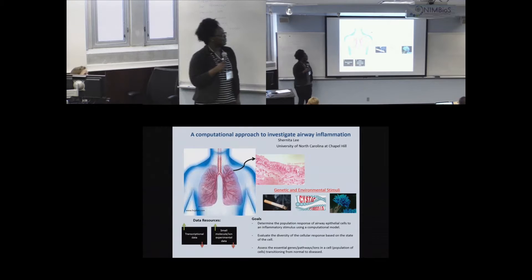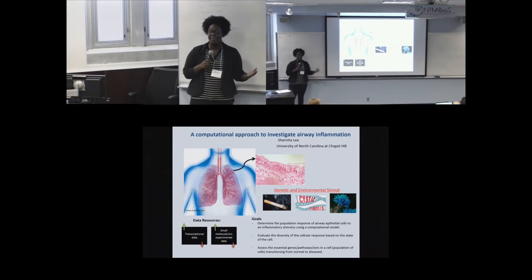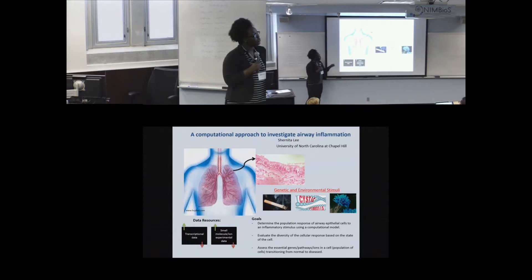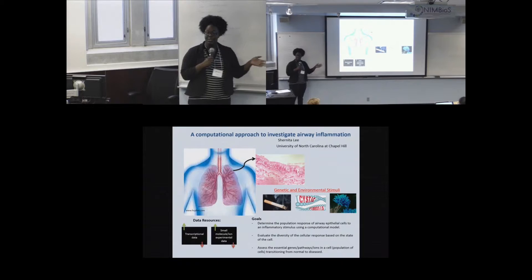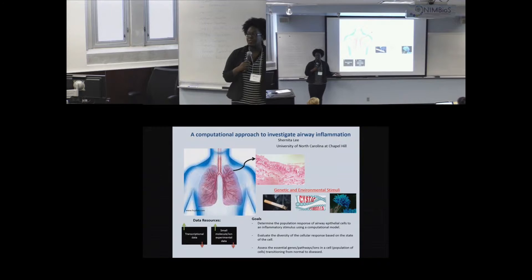I'll talk about my research interest in one slide. I'm focused on the lung and airway inflammation. The triggers I'm most interested in are cigarette smoke and cystic fibrosis. We use disease cells and normal healthy airway cells, along with the response of airway epithelial cells to pathogens such as fungal infection.